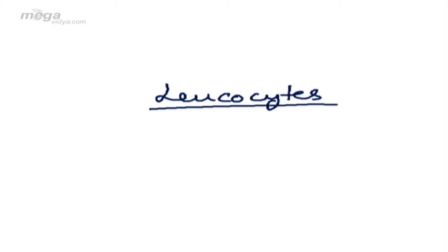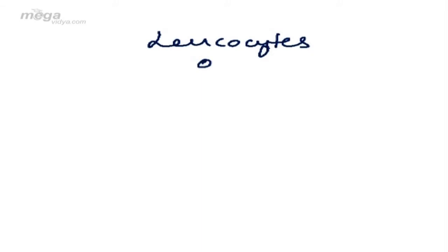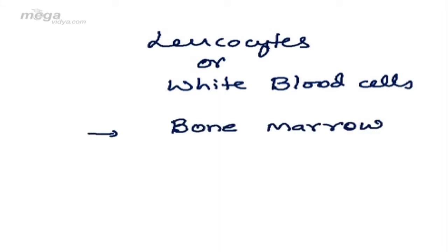Today we will discuss another blood cell which is leukocyte. Leukocytes are more commonly called WBCs or white blood cells. These cells are produced from bone marrow.